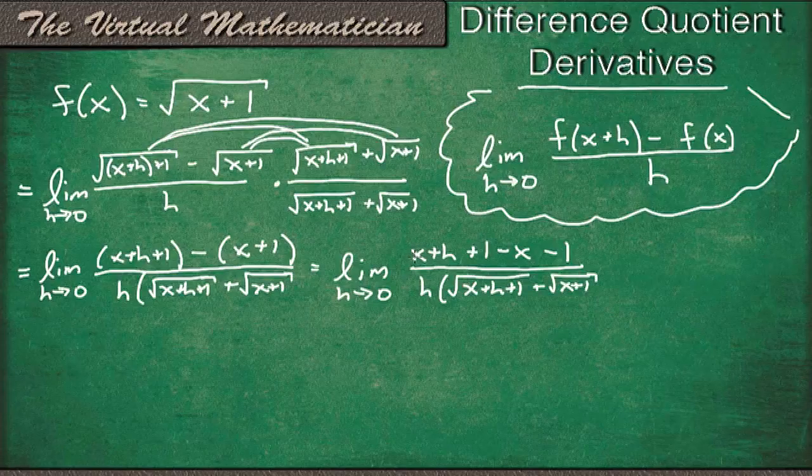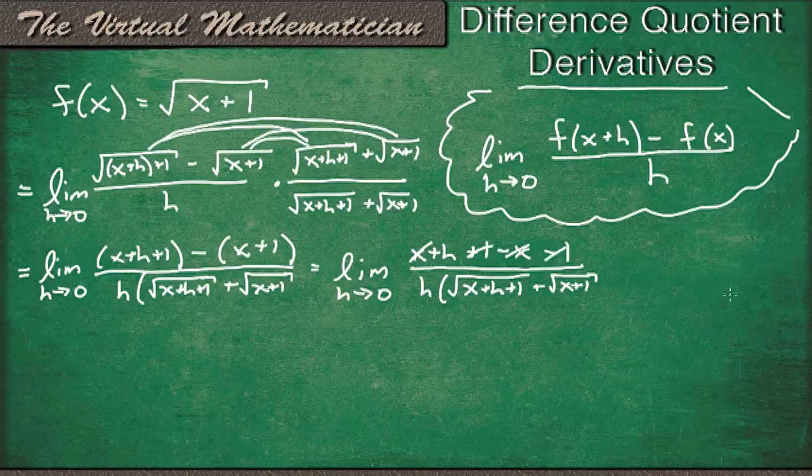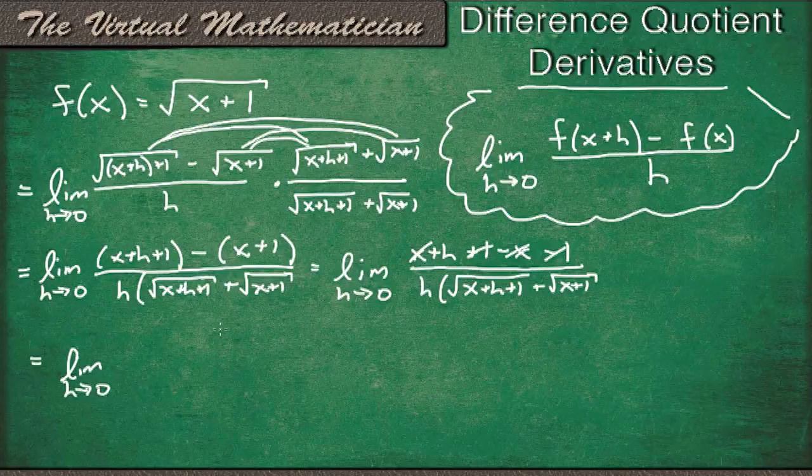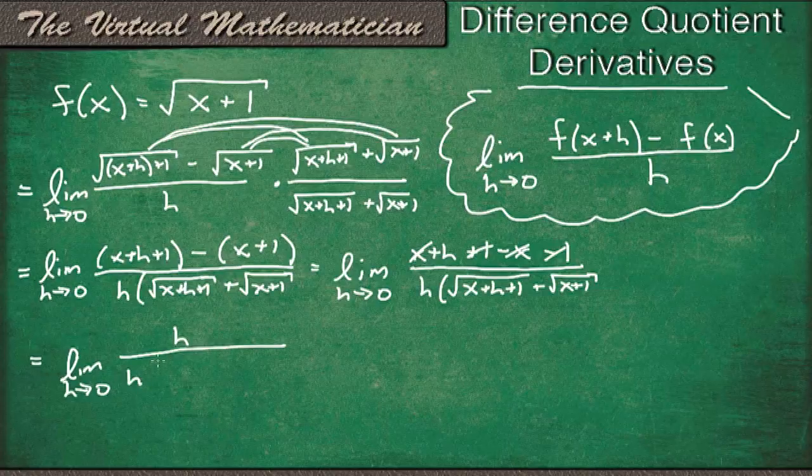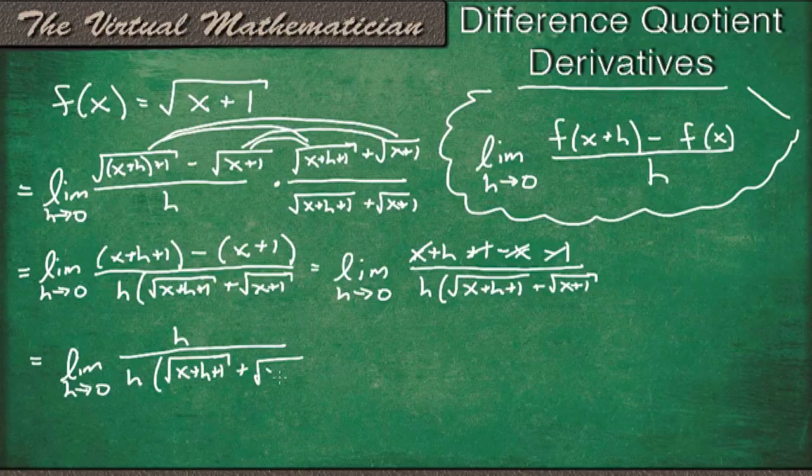Notice we have x minus x plus 1 minus 1. So this is just going to leave us with an h in the numerator. So we'll have the limit as h goes to 0 of h over h times all this stuff again, plus square root x plus 1.